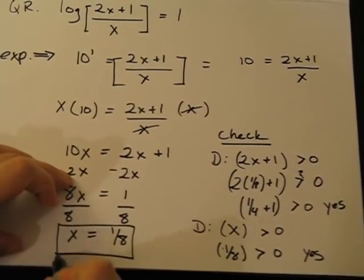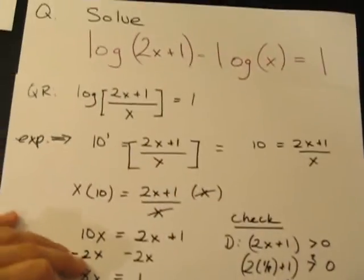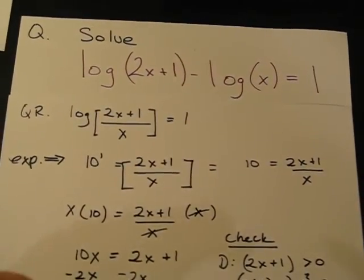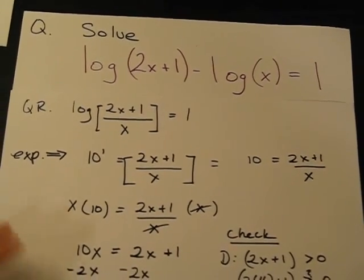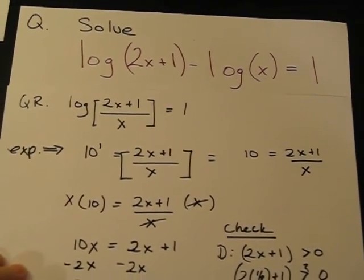So this is the solution to the equation log(2x + 1) - log(x) = 1 using the quotient rule to solve. Thanks for listening. Have a good day.